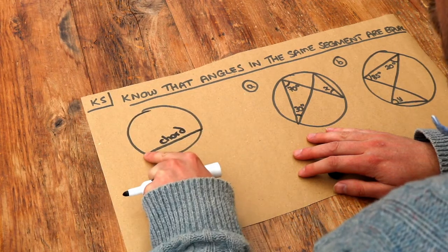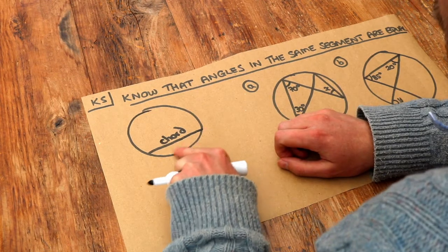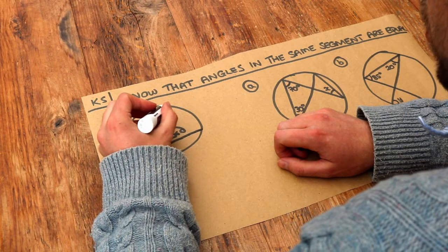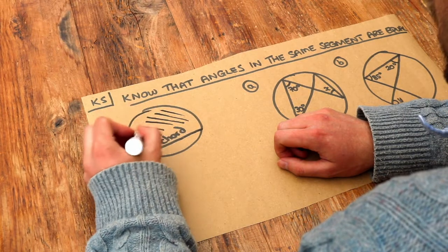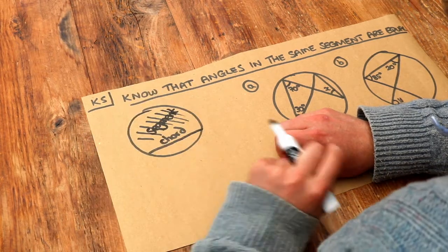So the chord is just a line that connects two points on the circumference of the circle and then the segment is the area on one side of the chord between the chord and the circumference. But also the segment could be the other side even if it's the large area. This whole thing is a segment just like this area is a segment.